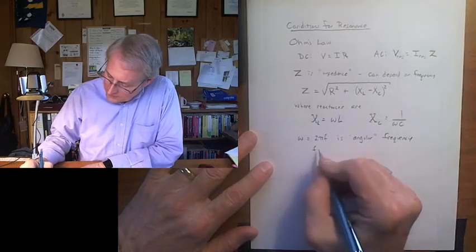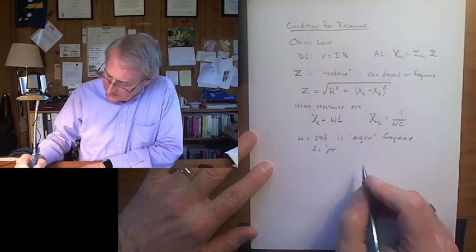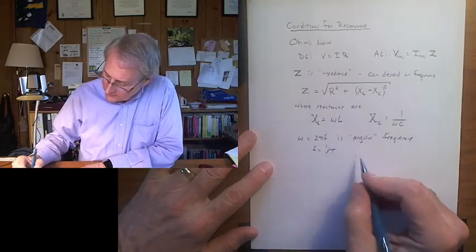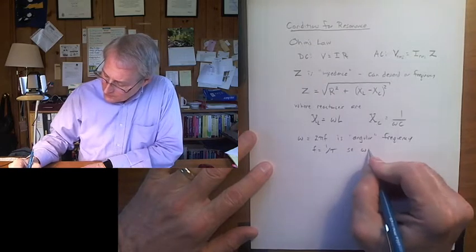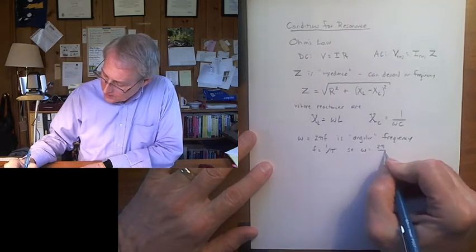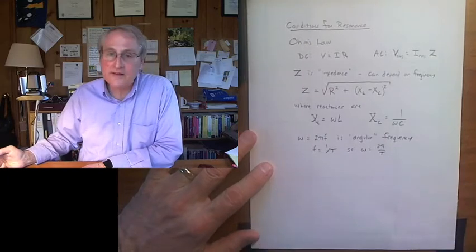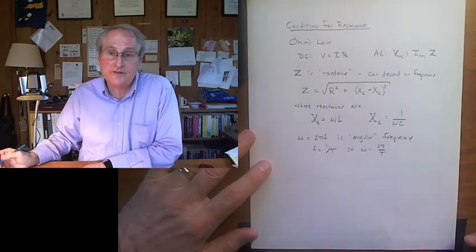And remember F is 1 over the period in cycles per second instead of seconds per cycle. So omega is also 2 pi over the period. It's the same definition as in circular motion in physics 1.